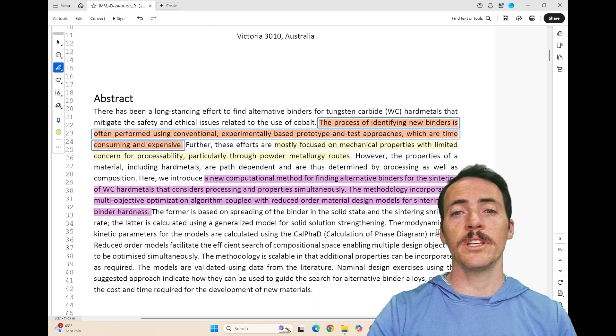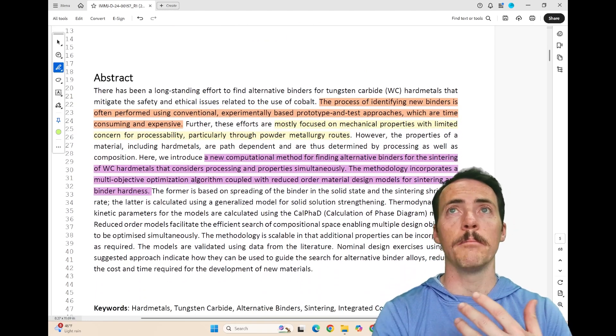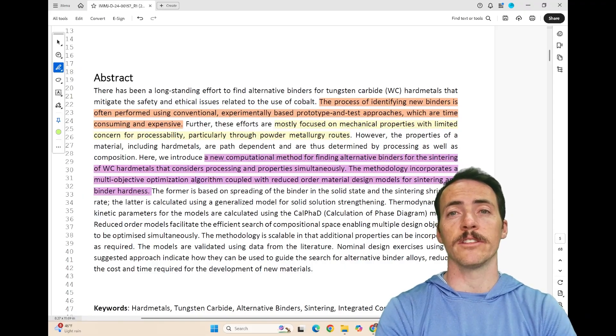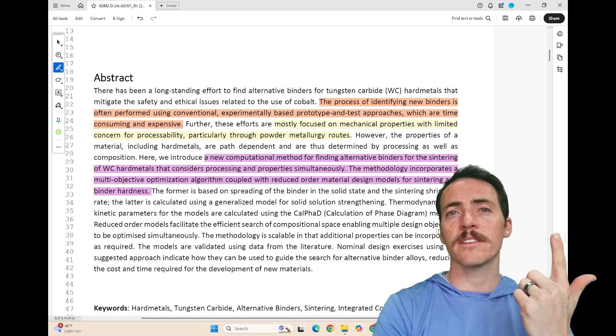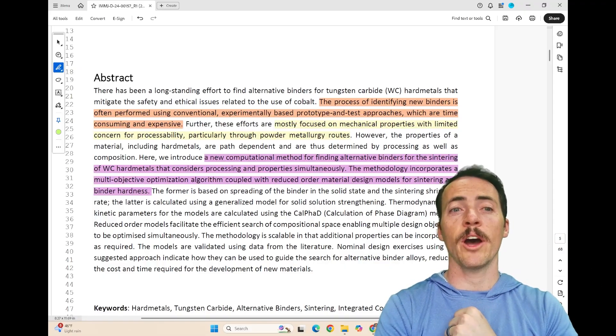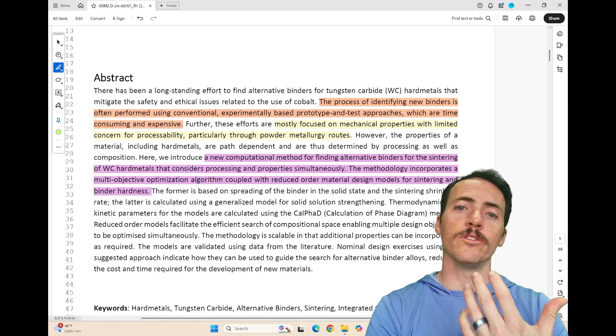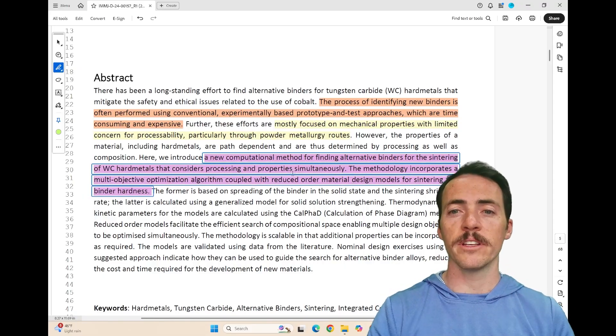So what they're going to try and set out to do here is assess whether or not they have a formulation methodology for finding new binders, which are based off of analysis of mechanical properties, because it does need to be hard, but also processability. And that's going to have to do with how we sinter these particles together. So they're putting forward this new approach, finding new materials by considering both processing and properties simultaneously.